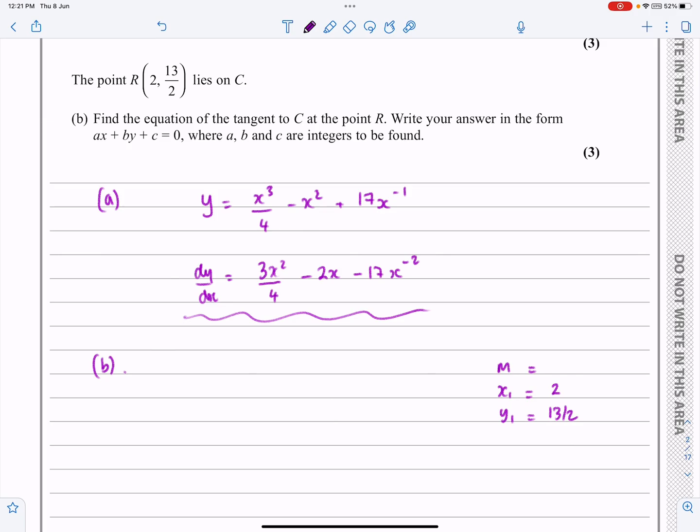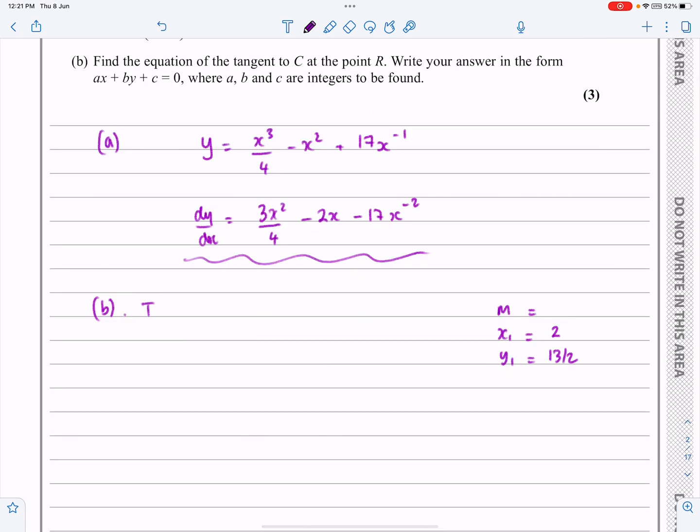So the only thing they haven't given me then is m, but if I've got dy/dx to find m... to find m, dy/dx, or rather m equals dy/dx equals 3x²/4 - 2x - 17x⁻², but where x is 2. So 3(2²)/4 - 2(2) - 17(2)⁻². Stick that all into your calculator. Apparently that works out to be -21/4.